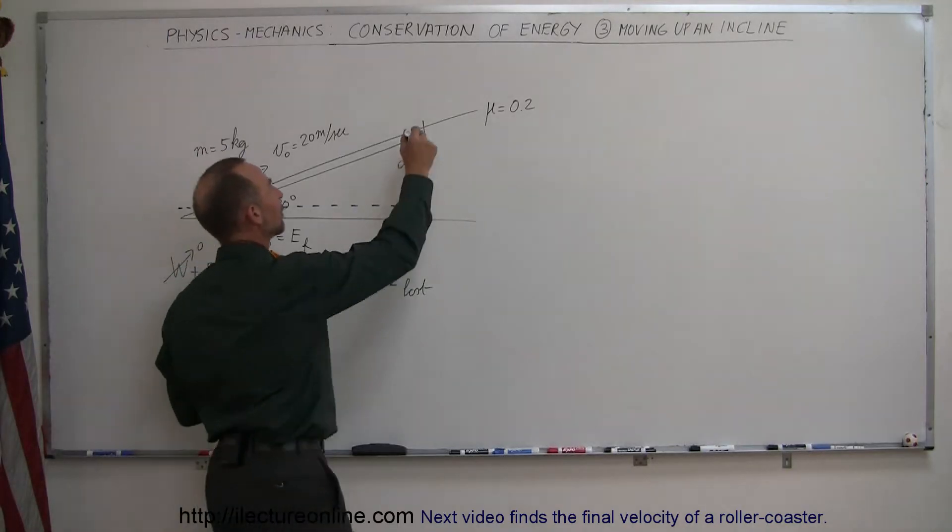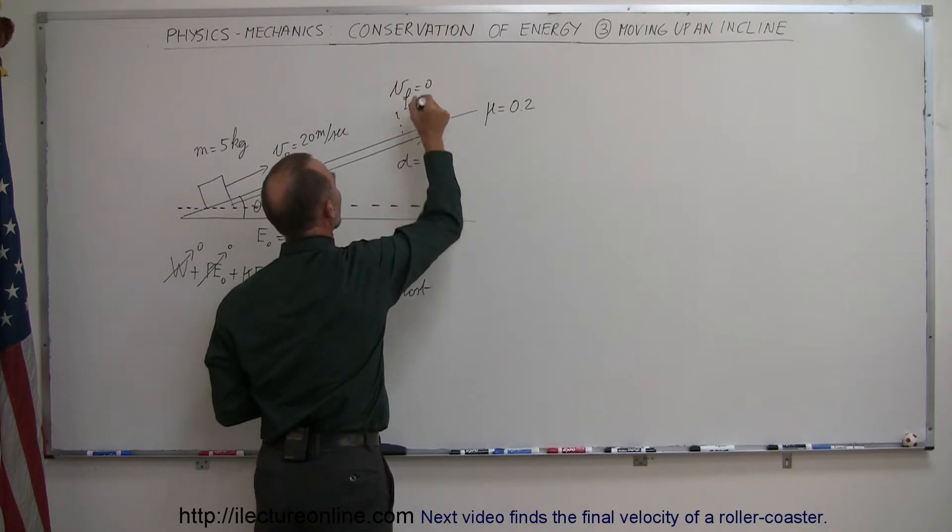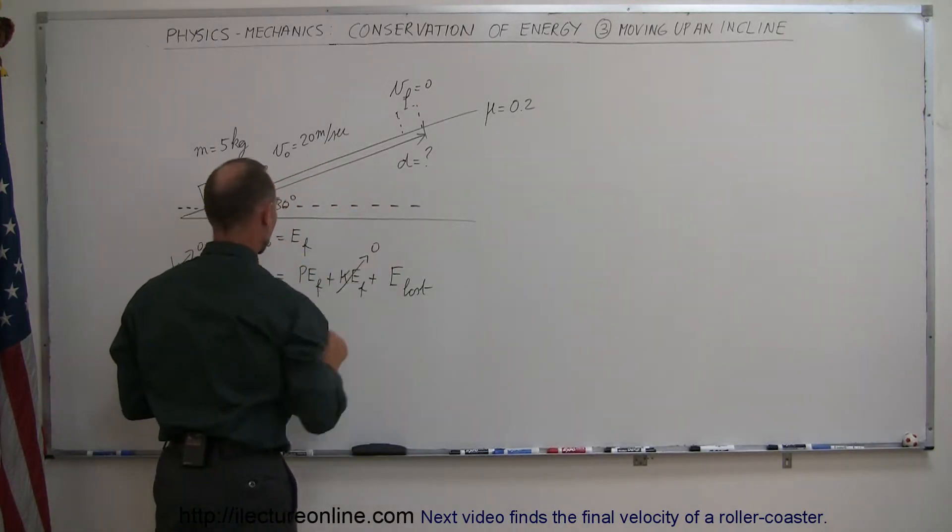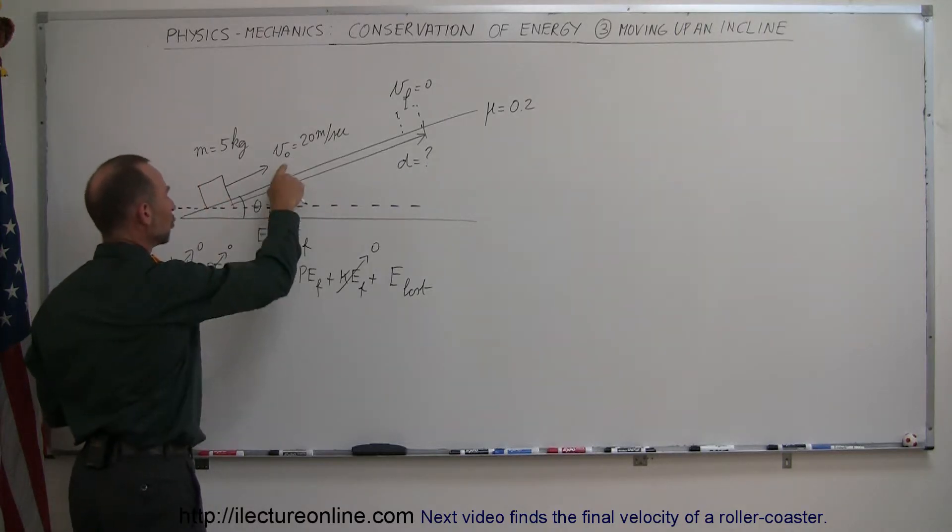And by the time the object reaches this height right here, V final is going to be equal to 0. So that term is 0 as well. So kinetic energy final goes to 0. So we have initial kinetic energy because it has motion.